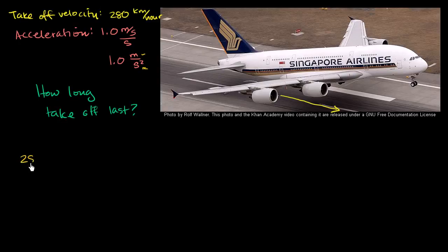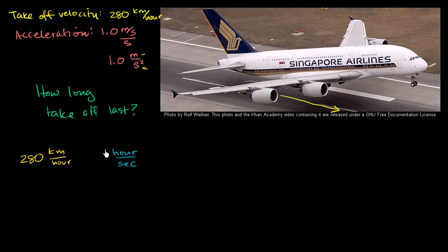If we have 280 kilometers per hour, how do we convert that to meters per second? Let's convert to kilometers per second first. We want to get rid of hours — if we have an hour in the denominator, we want an hour in the numerator and a second in the denominator. In one hour there are 3,600 seconds: 60 seconds in a minute, 60 minutes in an hour. So we multiply by that, the hours cancel out, and we get 280 divided by 3,600 kilometers per second.